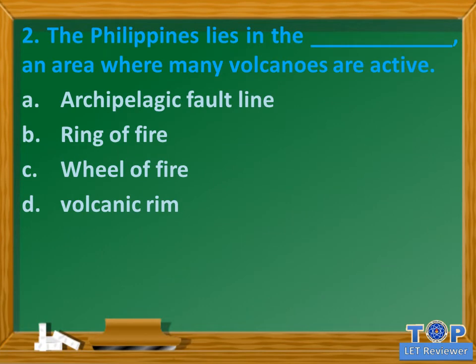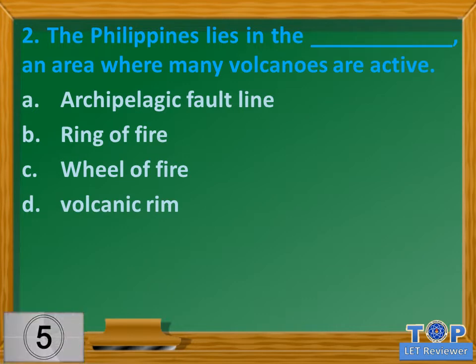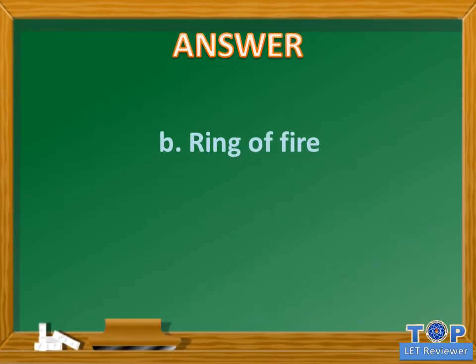Question number 2. The Philippines lies in the blank, an area where many volcanoes are active. A. Archipelagic fault line. B. Ring of fire. C. Wheel of fire. D. Volcanic rim. Answer: B. Ring of fire.